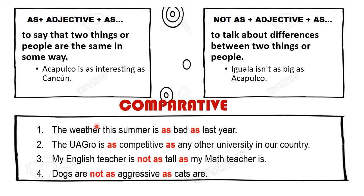Veamos estos otros. The weather this summer is as bad as last year. El clima este verano es tan malo como el año pasado. The WAGRO is as competitive as any other university in our country. La WAGRO es tan competitiva como cualquier otra universidad en nuestro país. My English teacher is not as tall as my math teacher is. Mi maestra de inglés no es tan alta como mi maestra de matemáticas. Dogs are not as aggressive as cats are. Los perros no son tan agresivos como los gatos.